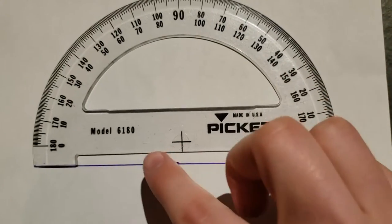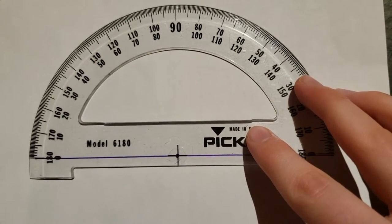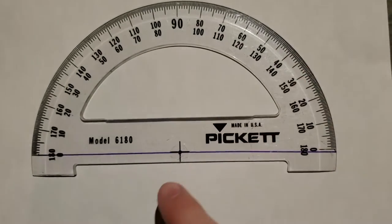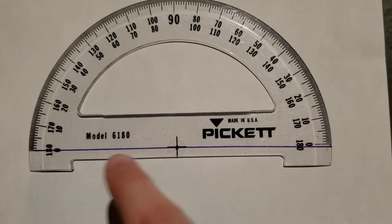Now, place this cross right on top of that dot, so that way your bottom line matches the line that you drew.